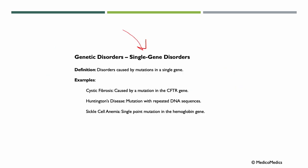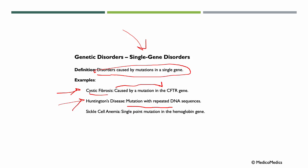Let's briefly mention some single gene disorders — disorders caused by mutations in a single gene. Examples include cystic fibrosis, caused by mutations in the CFTR gene; Huntington's disease, where a mutation involves repeated DNA sequences; and sickle cell anemia, a single-point mutation in the hemoglobin gene.